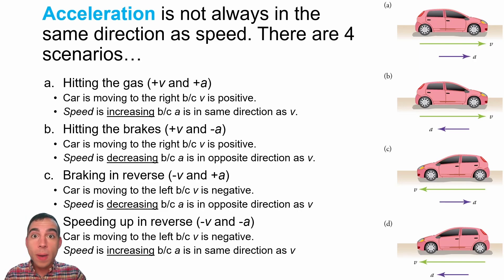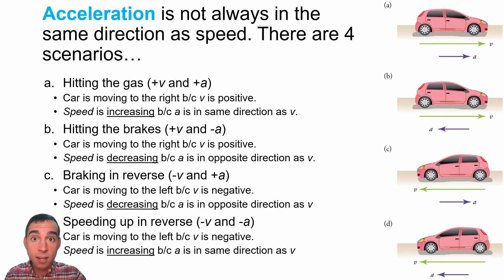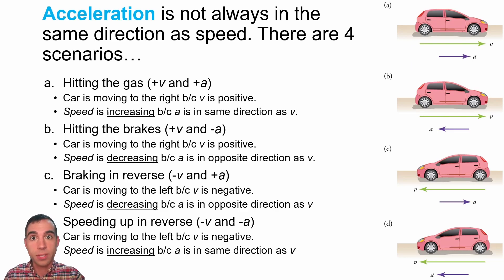You could also imagine traveling to the left with a negative velocity but experiencing a positive acceleration to the right, which would cause the motion to slow down again because the acceleration is in the opposite direction of the velocity. Finally, we could have a negative velocity—moving to the left—and experience a negative acceleration, meaning the velocity gets larger and larger in that negative direction because the acceleration adds to the velocity when they're in the same direction.